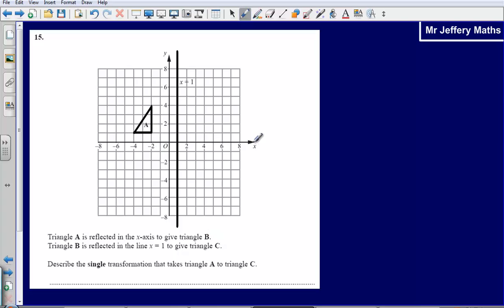So the x-axis here, you can see triangle A is reflected in that. So let's draw out triangle B. Triangle B will look something like that, connecting these points. That gives us triangle B.